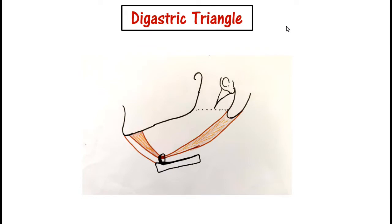First we will see the boundaries. The base is formed by the body of the mandible and an imaginary line from the angle of the mandible to the mastoid process.